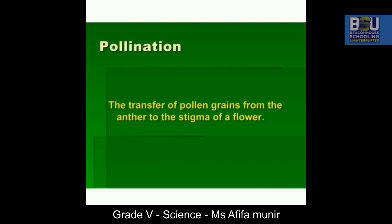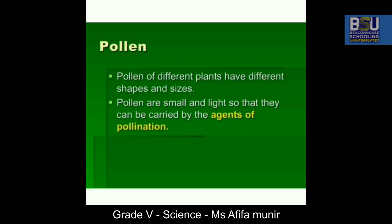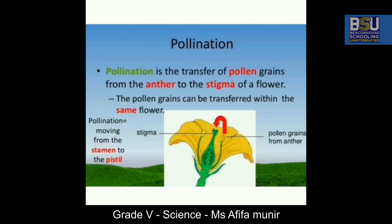Once the seed has grown and turned into a plant, then comes the process of pollination. It has grown its flowers, and then the process of pollination begins. Pollens of different plants have different shapes and sizes. Pollens are small and light so that they can be carried by birds, insects, and other things. Pollination is the transfer of pollen grains from the anther to the stigma of a flower.